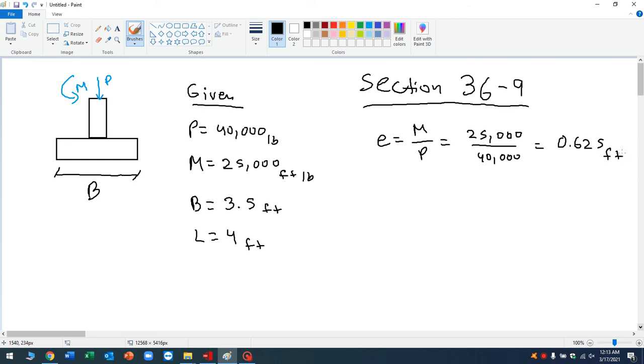Now, to find the maximum bearing pressure, there's going to be two scenarios, all right? So for one, if your eccentricity is less than the width divided by six, your maximum bearing pressure, we're going to call it Q, is going to be your point load divided by the width times the length times one plus six times the eccentricity divided by the width, all right? That's going to be the case if your eccentricity is less than your base divided by six.